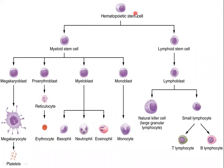A stem cell is any cell which undergoes division, differentiates into other types of cells, and also maintains its own population. The hematopoietic stem cell divides and differentiates into the myeloid stem cell and lymphoid stem cell while maintaining its own population. In the myeloid lineage, the myeloid stem cell differentiates into megakaryoblast, proerythroblast, myeloblast, and monoblast, and also maintains its own population. Similarly, the lymphoid stem cell differentiates into lymphoblast and maintains its own population. Blasts are rapidly dividing cells.